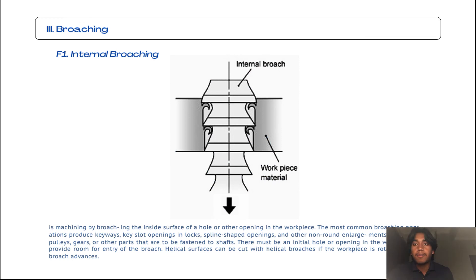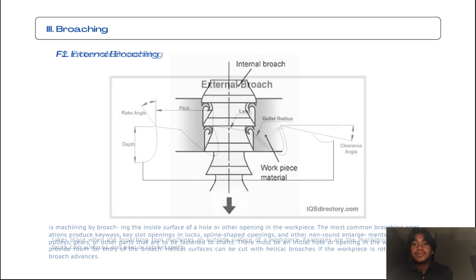The first subtopic from broaching is internal broaching. Internal broaching is machining by broaching the inside surface of a hole or other opening in the workpiece. The most common broaching operations produce keyways or keyslot openings in hubs, splined shape openings, and other non-round enlargements of holes in pulleys, gears, or other parts that are to be fastened to shafts. There must be an initial hole or opening in the workpiece to provide room for entry of the broach. Helical surfaces can be cut with helical broaches if the workpiece is rotated as the broach advances.